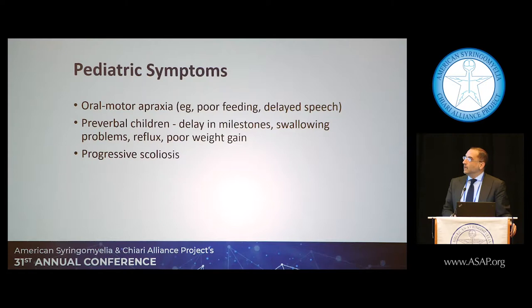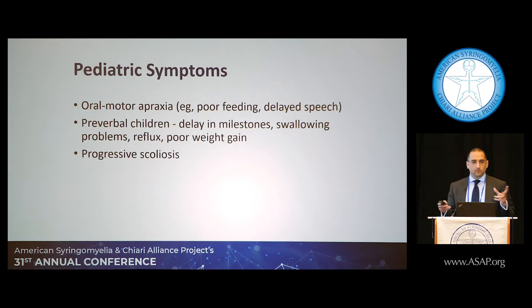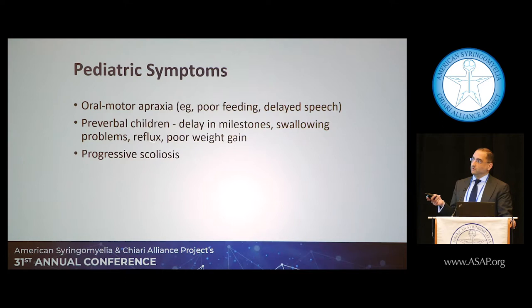In younger children and babies, there's oral motor apraxia — movements become slower, speech milestones are delayed. They're not feeding as well because of swallowing problems. In pre-verbal kids, it's really the delay in milestones: not walking at the expected age, not sitting up or maintaining upright posture when they should.